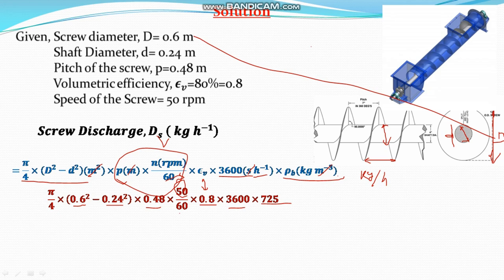Volumetric efficiency is given and 3600 into 725 kg per meter cube is the density of the grains. Therefore, the capacity will be very simple this much. There is 198,363.68 kg per hour.